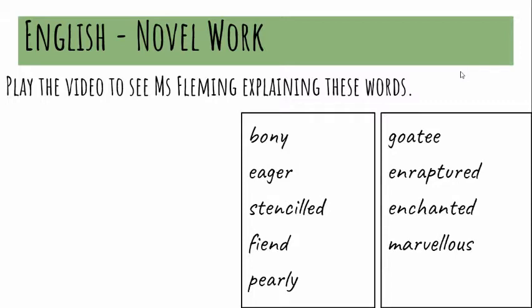I'm not going to move my mouse again because it's going to bring up that black box at the bottom and I don't want to cover any of the words. I'm going to start in the first box. The first word is bony — if something is really bony it might be quite skinny, it might not have a lot of fat on it or a lot of meat or muscle on it.